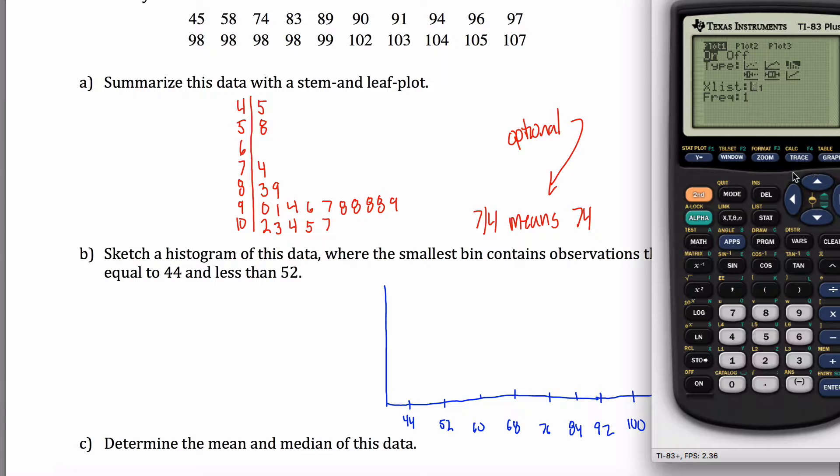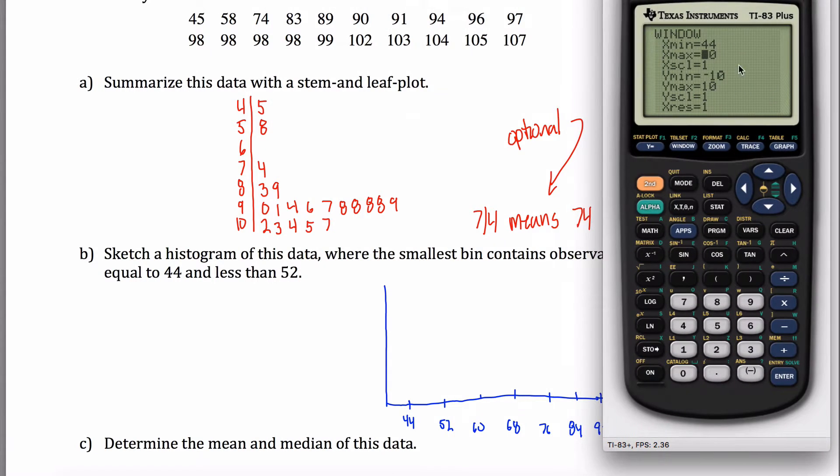You could go to graph now but it won't have the bin sizes right. So what I'm going to do is hit this window key and tell it that I want my x values, the minimum to be 44. And the maximum, well it looked like in my picture here the largest bin went up to 108 so maybe I'll put that in for my max. And the x scale, this one's important, this is whatever your bin size is so in this case it's 8. Y minimum, I usually make this 0 when I'm making a histogram. And then your y maximum is the maximum number of observations you'll have in a given bin. We'll take a look at that and then we'll change it if need be. How do you take a look? You hit this graph key.